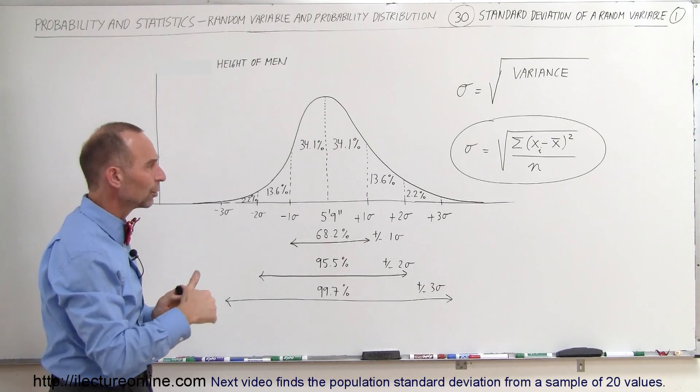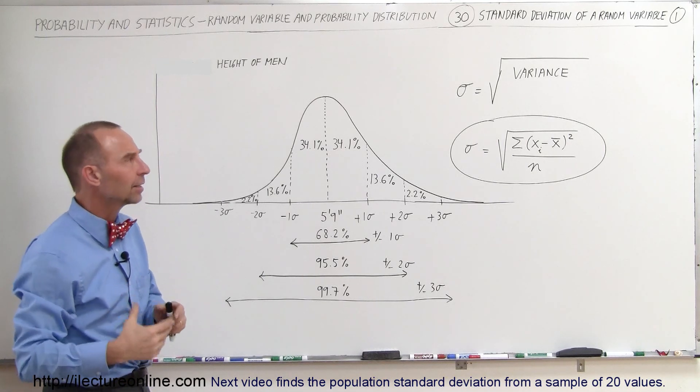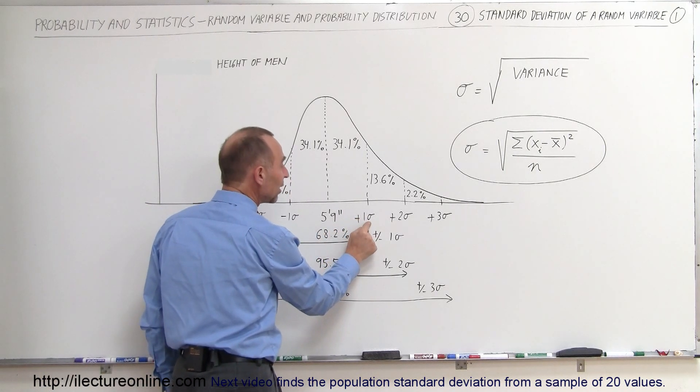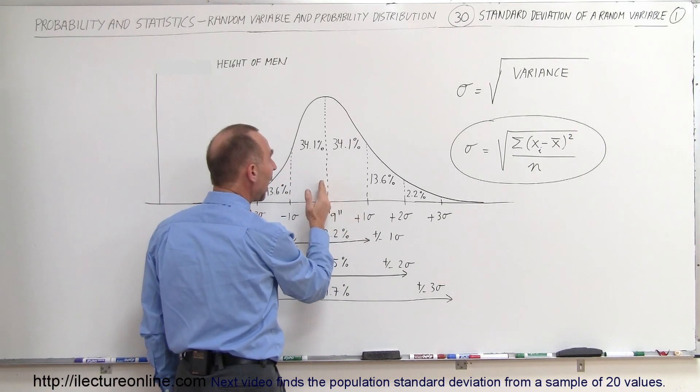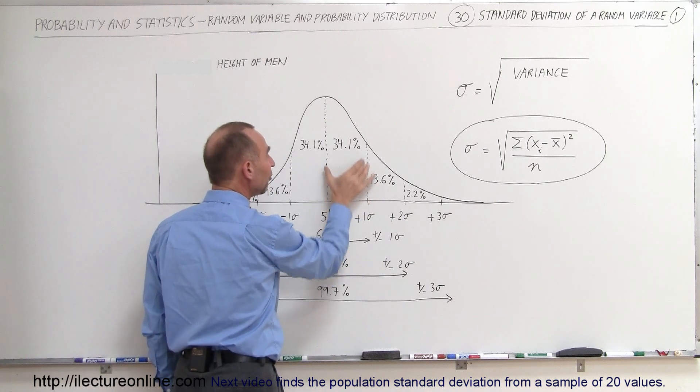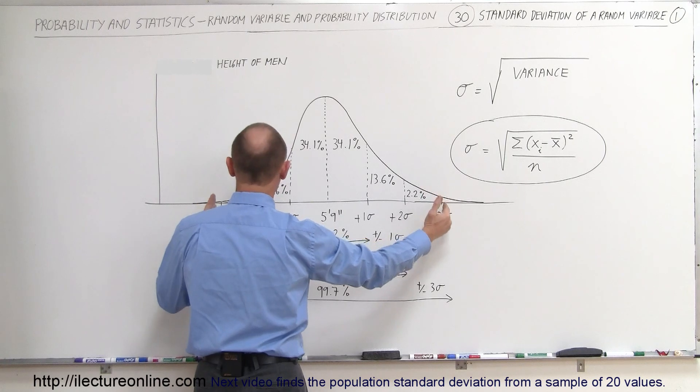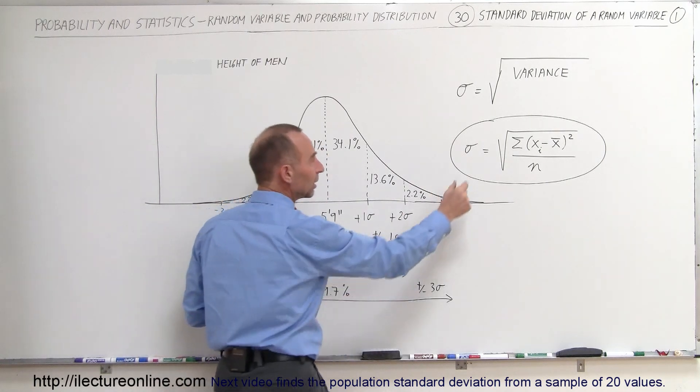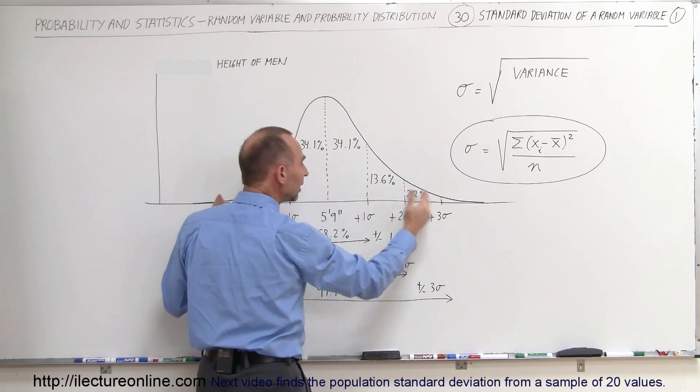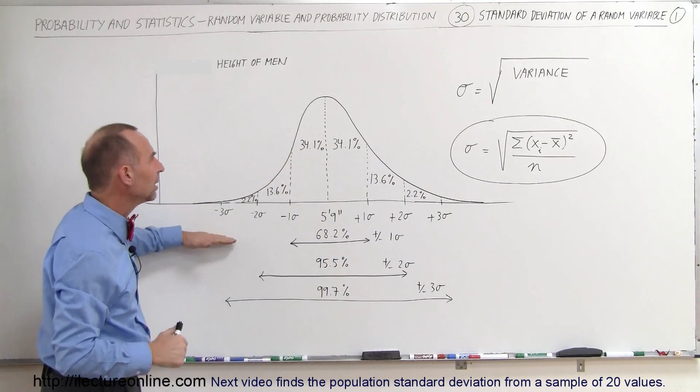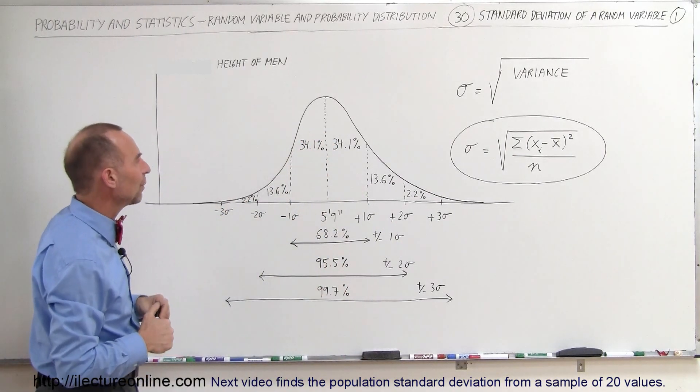We'll get to that in a moment. So we're going to show you some examples of how to calculate the standard deviation. Now, once we calculate the standard deviation, we can then figure out how many of our sample fall within certain ranges. We can see what percentage of the population falls between plus or minus 3 sigma and once we calculate what sigma is, we can actually calculate the numbers associated with that. And that's the great beauty of the standard deviation of a random variable.